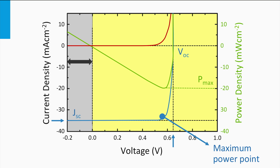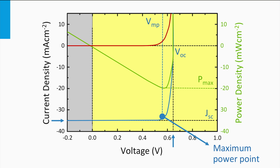If the voltage is smaller than zero — which we call reverse bias — the illuminated solar cell does not generate power but consumes power, and will heat up. If the voltage is larger than the open circuit voltage, the solar cell is dissipating power as well. The solar cell has its best performance at the maximum power point. The voltage at the maximum power point is called Vmp, and the current density at the maximum power point is called Jmp. The maximum power density P max equals Vmp times Jmp — in other words, the shaded area under the maximum power point in the JV plot represents the power density generated.